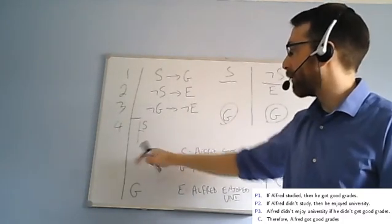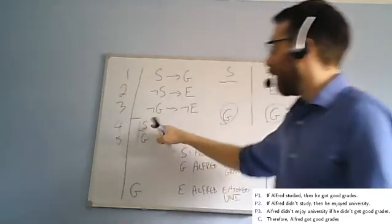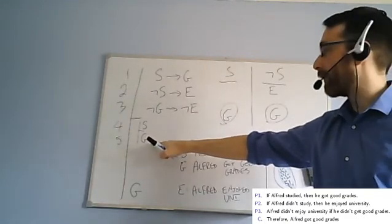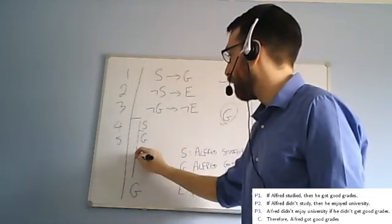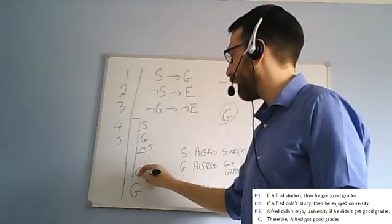So our natural deduction proof for that original argument might look like this. I assumed S and I show that G is true in that case. Then after that, I assume temporarily again something. I assume not S. Some stuff happens and I get down to G.